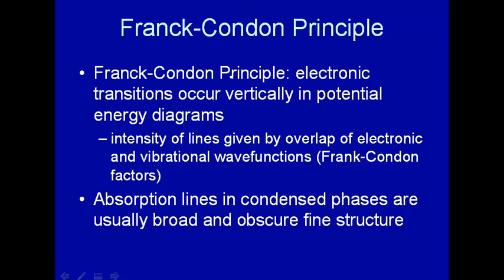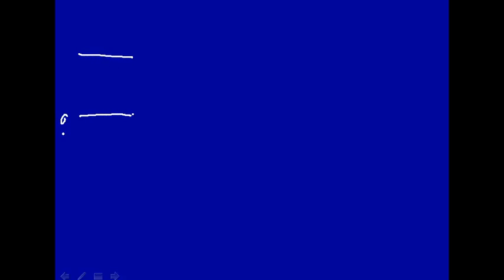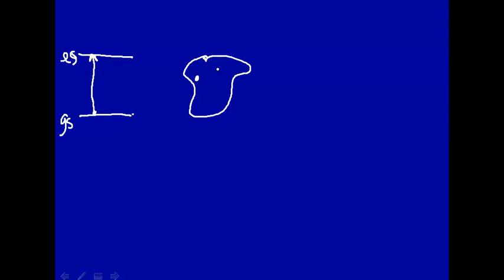The Franck-Condon Principle is based upon the fact that electronic transitions occur vertically in potential energy diagrams. What does this mean? Let's say we're looking at an electronic transition going from the ground state to the excited state — absorption, going up. We have a molecule with three nuclei, and surrounding those nuclei is an electron cloud. Let's call this the ground state.